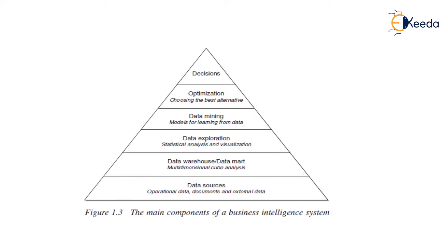Next is the BI methodology pyramid, which follows a bottom-up manner. At the base, the first layer is the data source — operational data, documents, or external data. The second layer is the data warehouse or data mart, where data is arranged in a multi-dimensional cube format. The third layer involves statistical analysis and visualization — we can explore the data, analyze parameters, and visualize it using different charts.